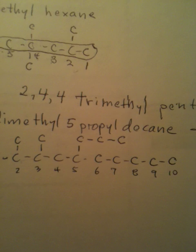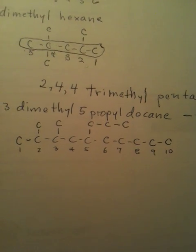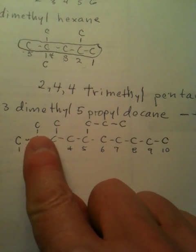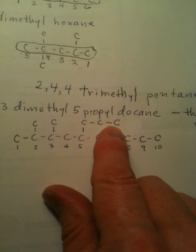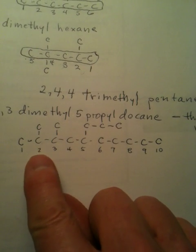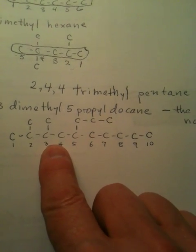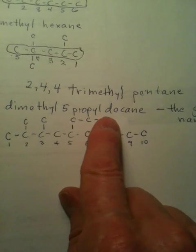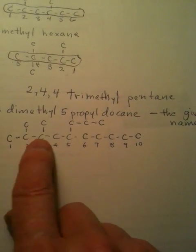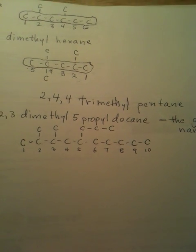And now you can see, as I zoom in here, that we have methyl, methyl, and a propyl. So, this is two, three dimethyl. This is my five propyl. And then the longest chain is ten. And so, we're in business.